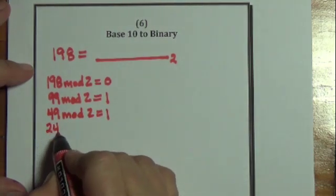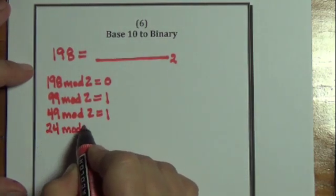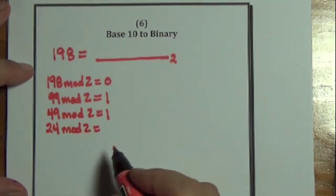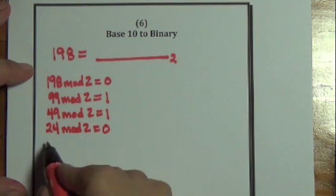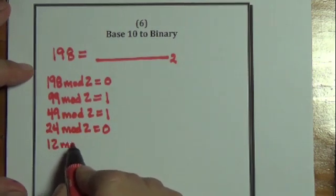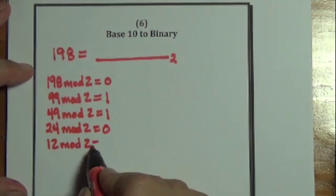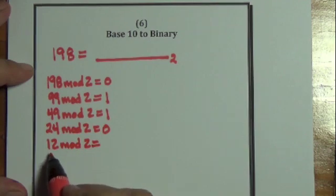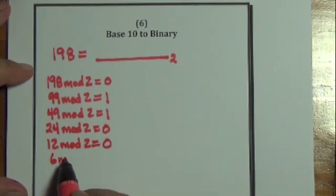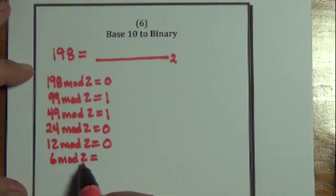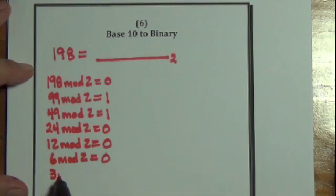So the quotient is 24 this time. I take 24 mod 2. 2 goes into 24 12 times with a remainder of 0. 12 is my new quotient. It goes on the next line. Now 2 goes into 12 6 times with a remainder of 0. And 2 goes into 6 3 times with a remainder of 0.